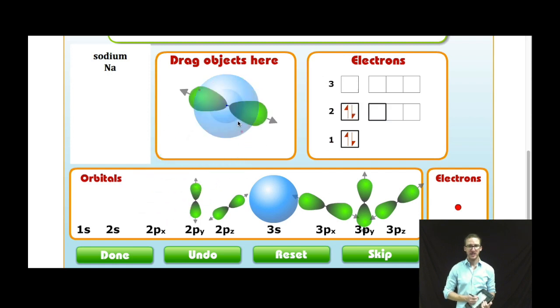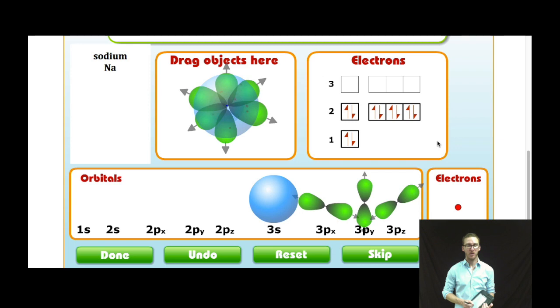After the 2s comes the 2p. And there are three 2p orbitals. Again, watch how I fill it. According to Hund's rule, I'm going to put one in each individual orbital before I go back and put a second. Once those three 2p orbitals are filled, I'm going to move on to the 3s. And here I'll add sodium's final electron.